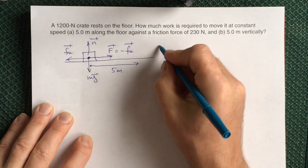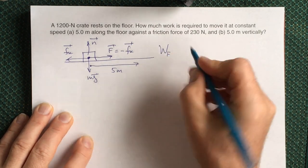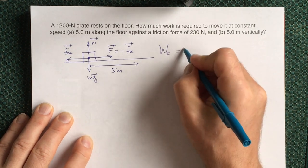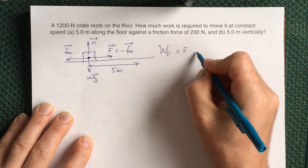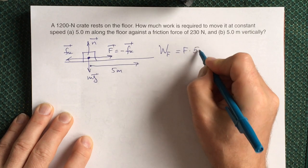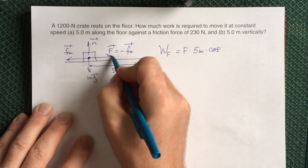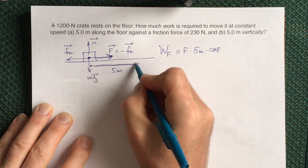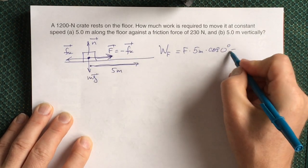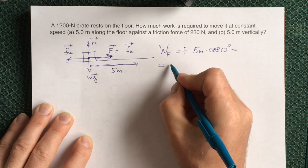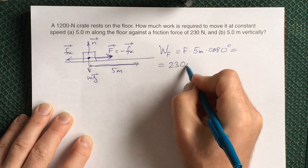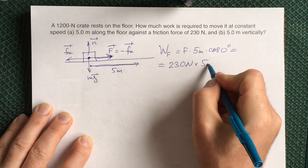So the work done by the force F would be our force F magnitude times displacement 5 meters times cosine of the angle between displacement and force. The angle is 0 degrees. So we have force 230 newtons times 5 meters.